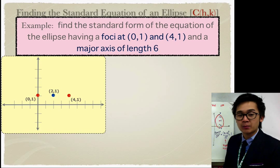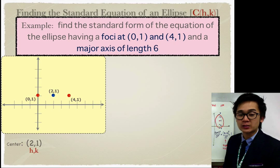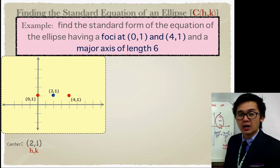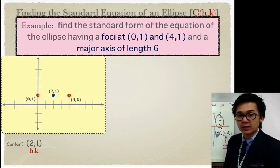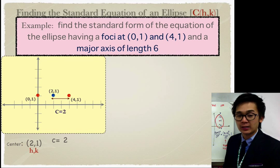It's about counting the number of units between the foci to find the center. For the ellipse with center at (2, 1), h and k are 2 and 1. The value of c can be found by counting the number of units from the center to a focus, giving c equal to 2. Now we need to find the values of a and b in the standard equation.